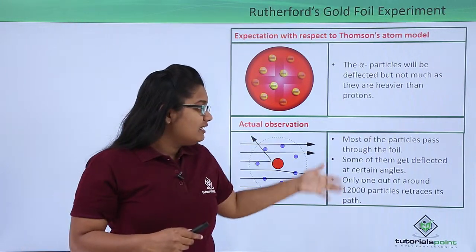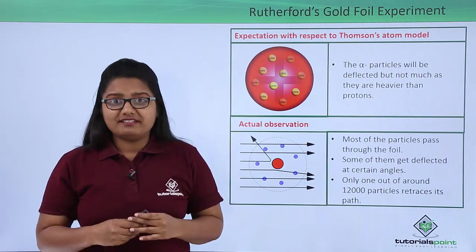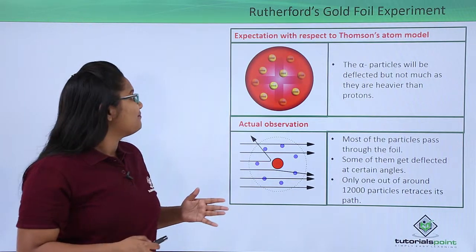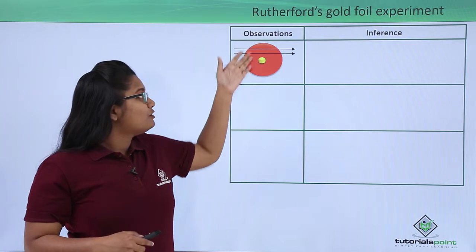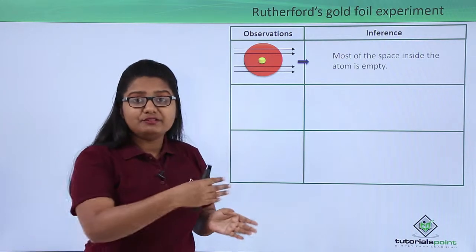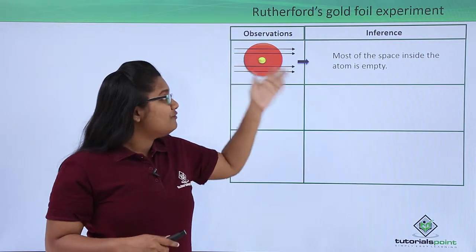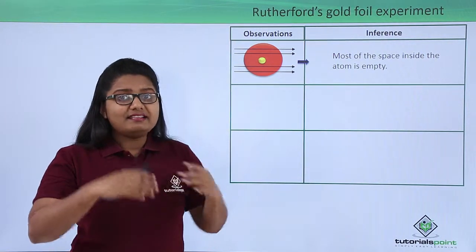Based on these three observations he made inferences. The first observation was that almost all the alpha particles passed right through the foil without any deflection, and from this he inferred that most of the space inside an atom is empty.